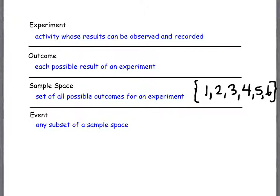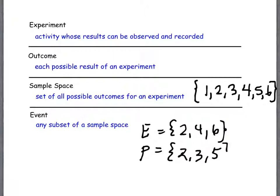And then an event is any subset of the sample space. So maybe you do the event E, where you list all the evens. Or maybe you do the event P, where you list all the primes: two, three, and five. So whatever it is.